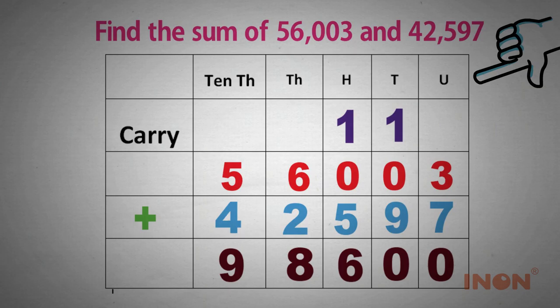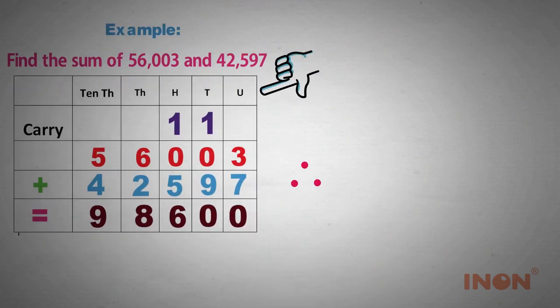So in total, we get 98,600. Therefore, the sum of 56,003 and 42,597 is 98,600.